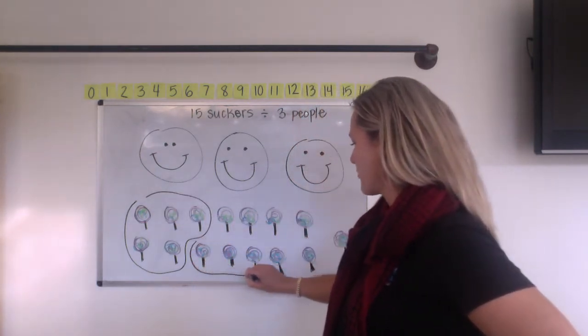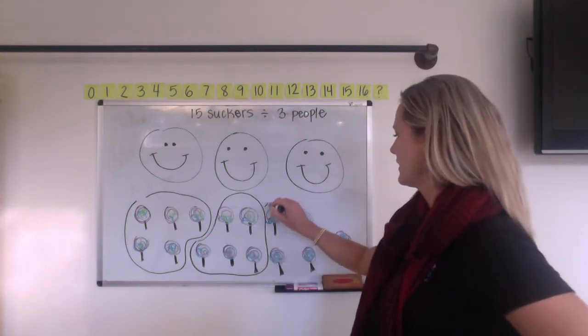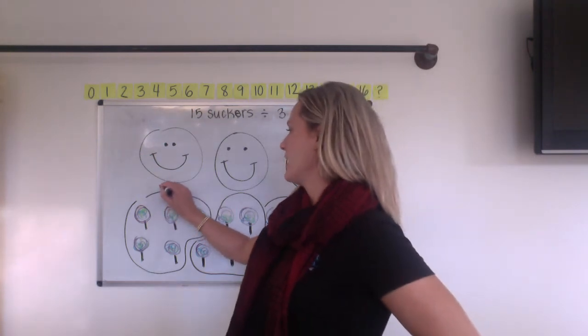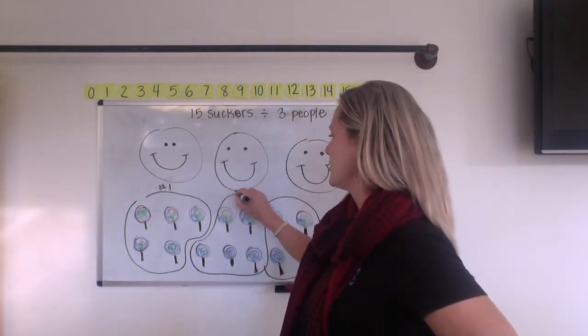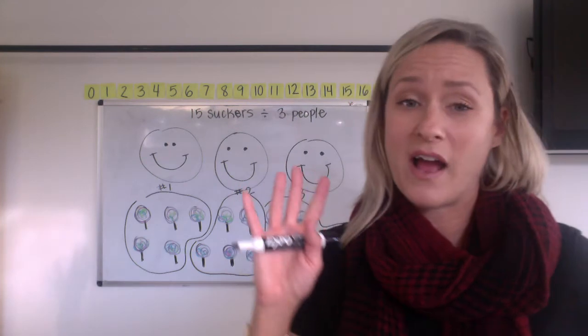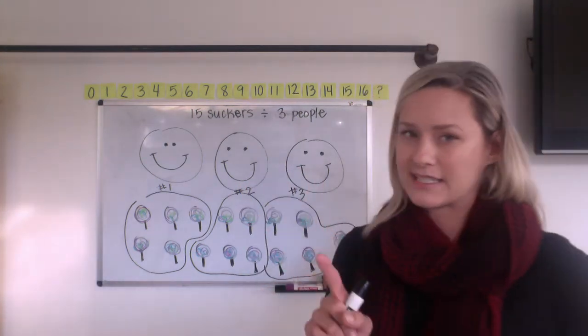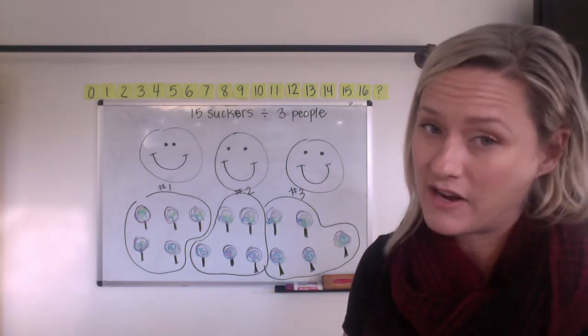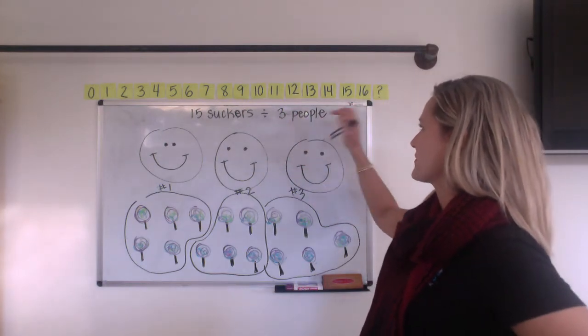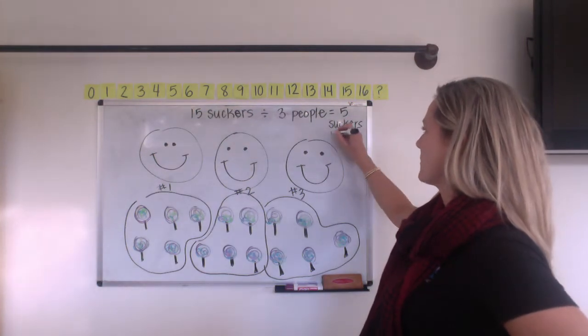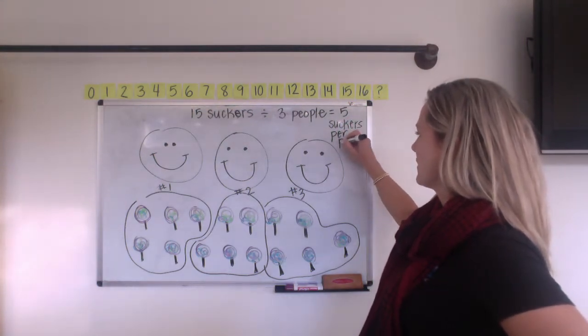Let's see. Grab three from down there and two from up here. Right? So this would be person number one, person number two, and person number three. Now we don't want any crying with candy, right? So everyone has to get the same amount. So make sure everybody has the same amount in each group. All right. I see five in each group. So 15 suckers divided by three people equals five suckers per person. So it's always good to get that visual.